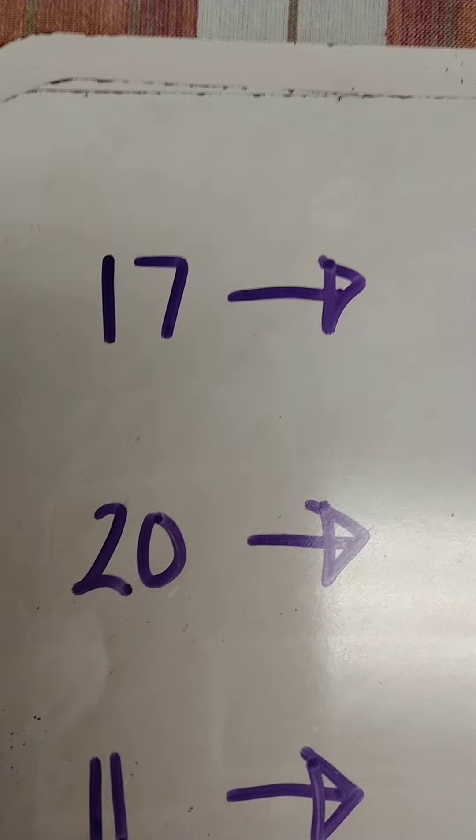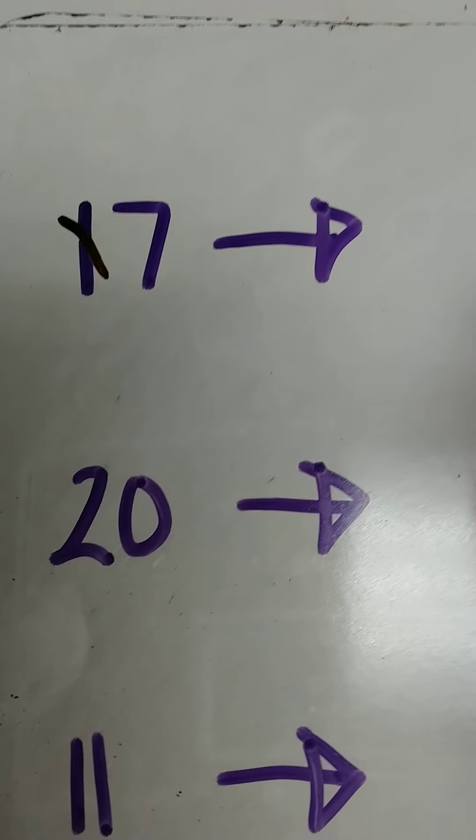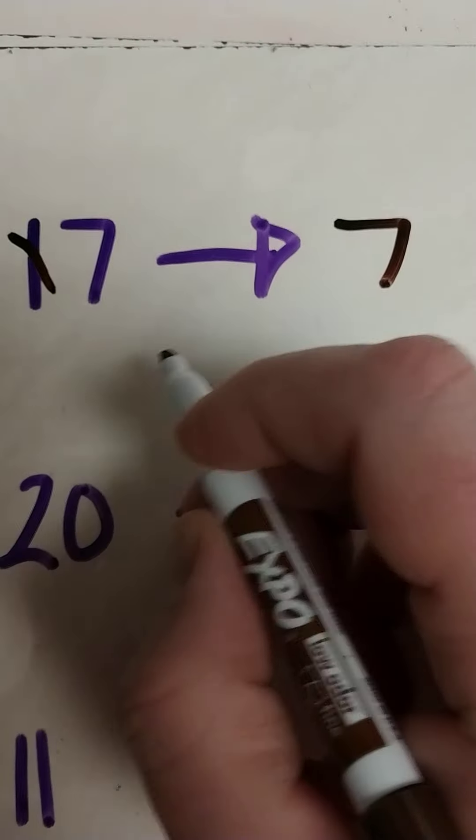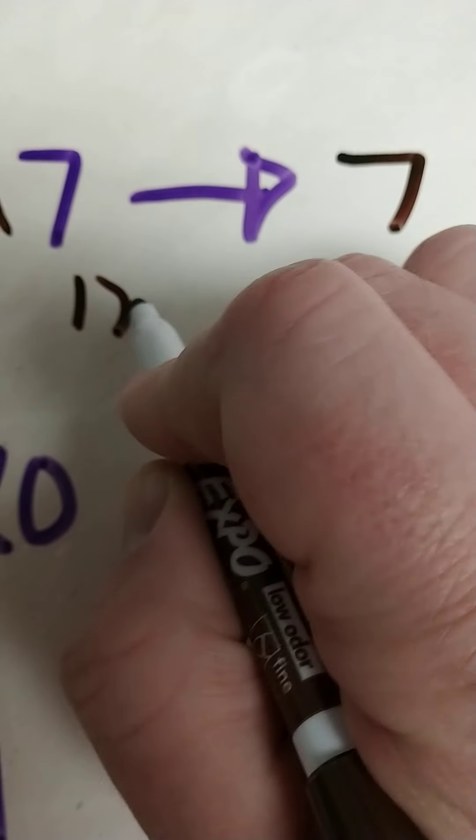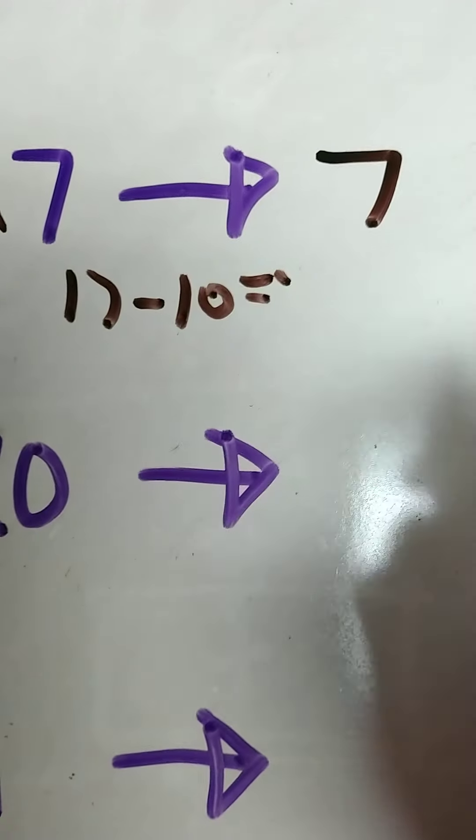Now if we're doing 10 less, 17, we're just going to take off the 10. So 10 less than 17 is 7, so it's like 17 minus 10 equals 7.